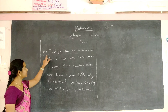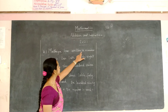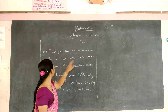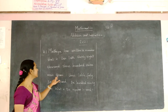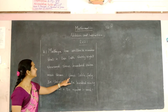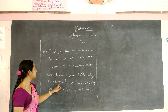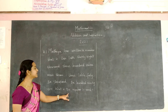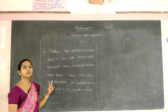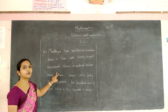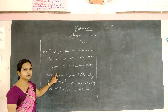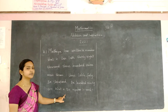The 6th problem: Mutia has written a number that is 2,38,307 more than 3,46,691. What is the number in words? The two numbers are given in words. We are going to convert them into figures, add the numbers, and then change the answer back into words.